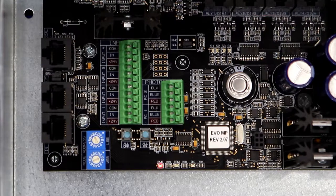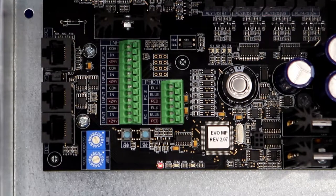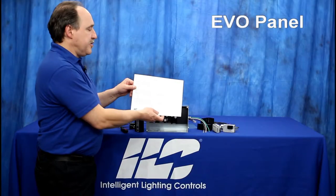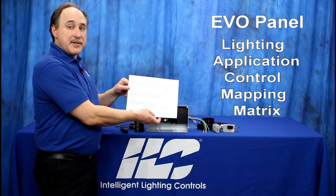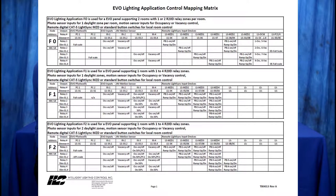In this example I'm going to be using application F3. Refer to the EVO lighting application control matrix — this guide will help you to select the proper control application. In this matrix we have listed all 16 lighting applications.